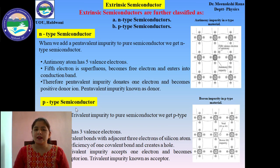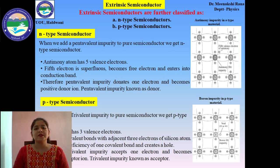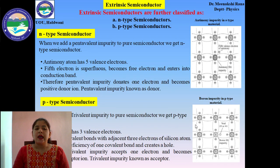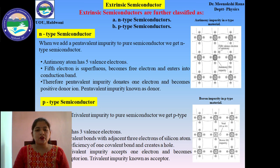Now, P-type semiconductors. P-type semiconductors are formed when trivalent impurities are added to a pure semiconductor. A boron atom has 3 valence electrons and easily forms covalent bonds with the adjacent 3 valence electrons of silicon. There is a deficiency of one covalent bond, which creates a hole. Therefore, the trivalent impurity accepts one electron and becomes a negative acceptor ion. So this trivalent impurity is also known as acceptor impurity.